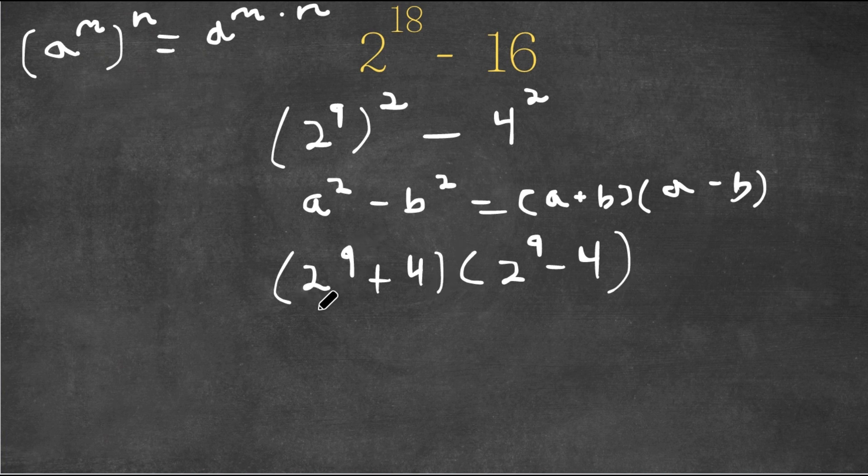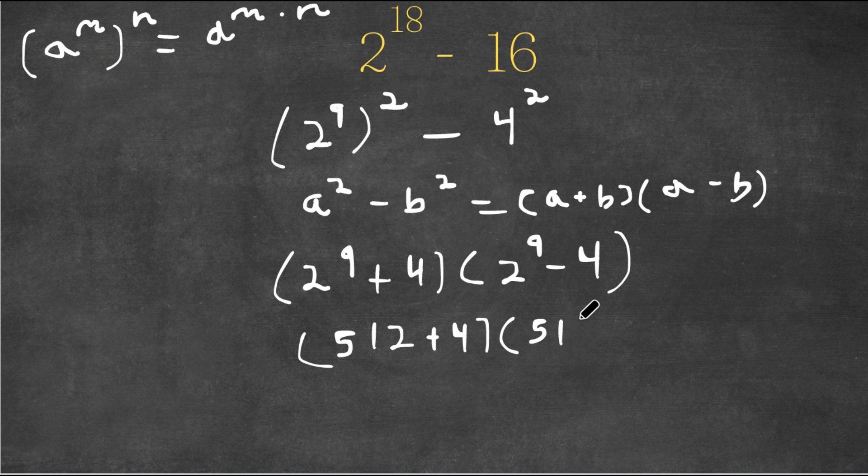Now 2 to the power of 9 is 512. So now I have 512 plus 4 times 512 minus 4.